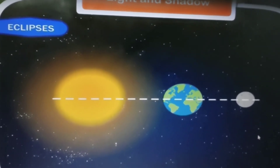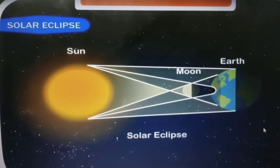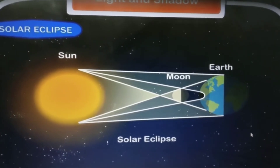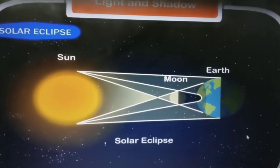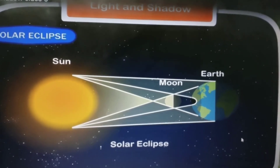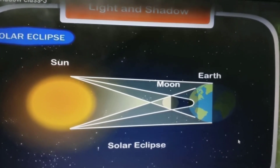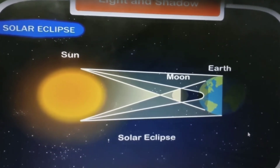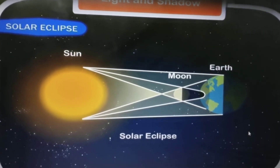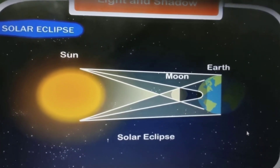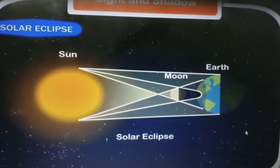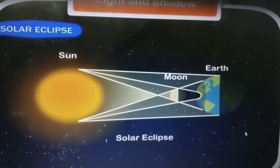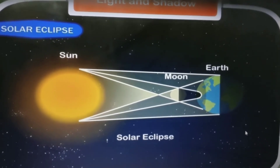There are two types of eclipses: solar eclipse and lunar eclipse. A solar eclipse occurs when the moon comes between the sun and the earth. When moon comes in between, the shadow of the moon falls on the earth and it does not allow us to see the sun. The shadow of the moon falls on a portion of the earth and people from that part cannot see the sun — this gives a total solar eclipse in those areas.